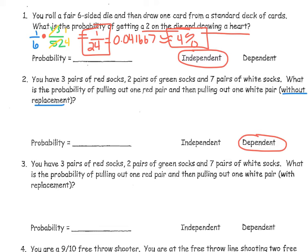To calculate this probability, let's draw a picture of what's going on: we have 3 red pairs, 2 green pairs, and 7 white pairs — 12 total pairs. The probability of the first event, pulling out a red pair, is 3 out of 12.